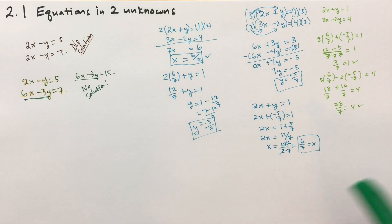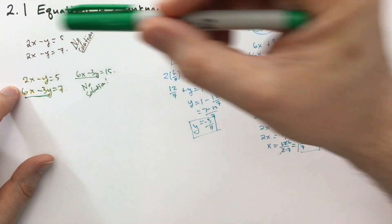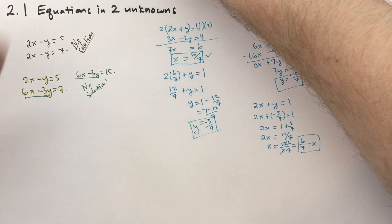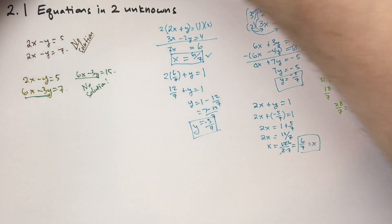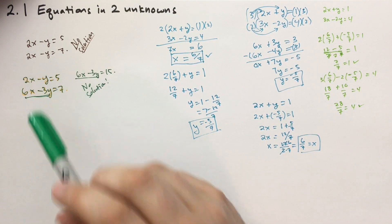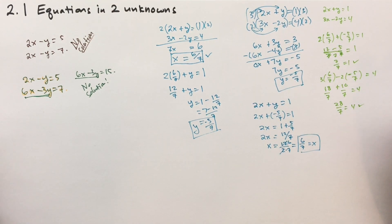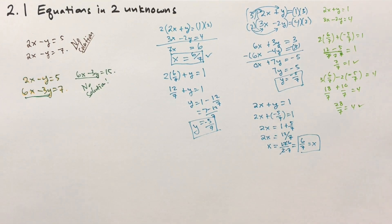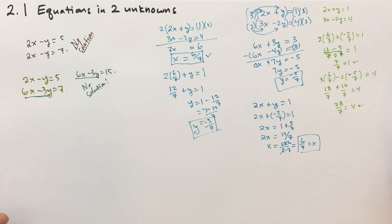Sometimes it's not immediately obvious, but you'll notice that when there's no solution, you end up with basically the same left side equaling different right-side values. There are actually three possible outcomes when solving two equations with two unknowns: no solution, a specific unique solution where x and y each have a specific value, or they're actually the same line — a linear solution with infinitely many solutions.